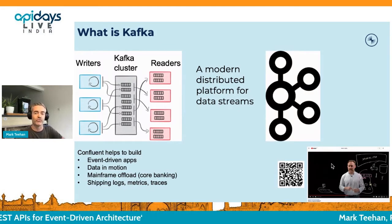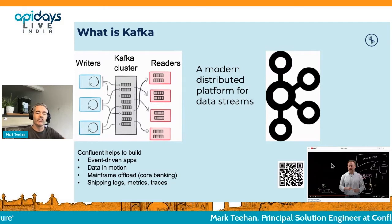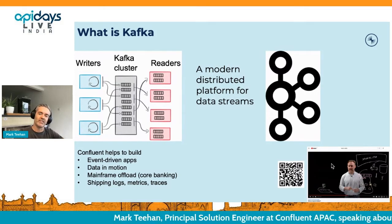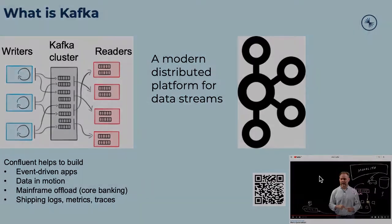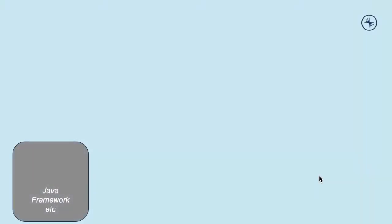Kafka is now widely adopted for event-driven apps. There's a lot of data in motion — Kafka is really for real-time responses. We do a lot of mainframe offload, connecting legacy systems to modern systems, usually microservices, trying to bridge between these two very different worlds. A fairly traditional usage is also for shipping logs, metrics, and traces, and just using Kafka as a big pipe between different systems.